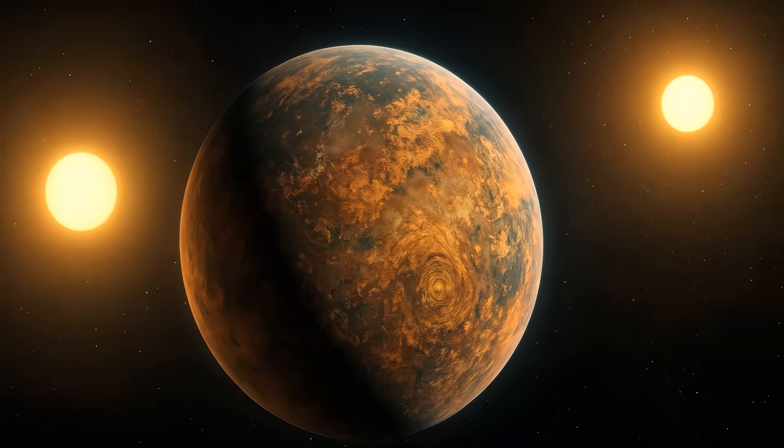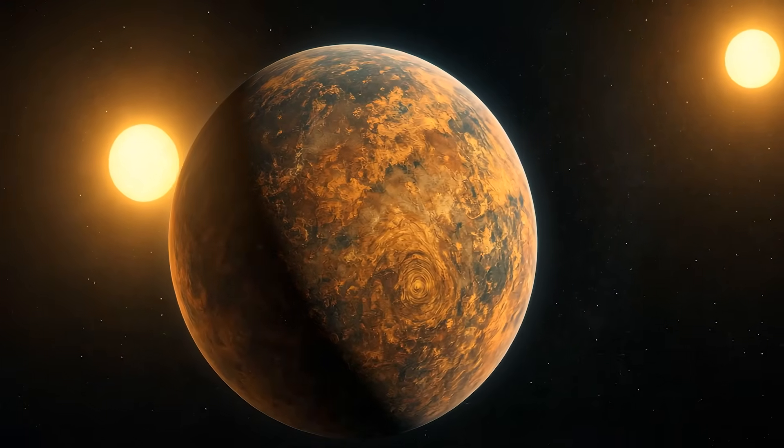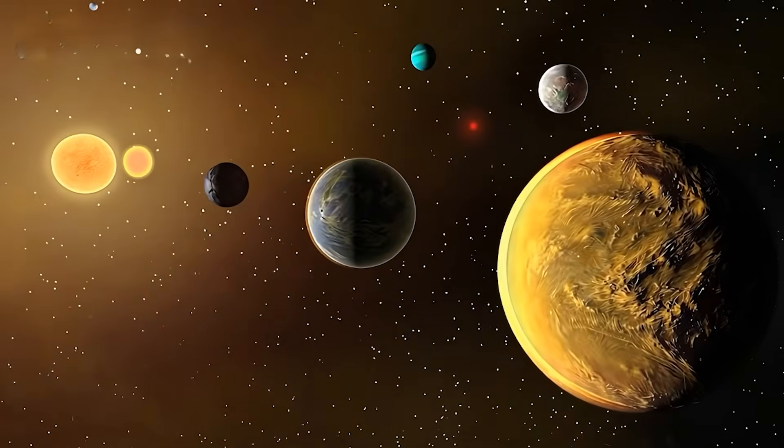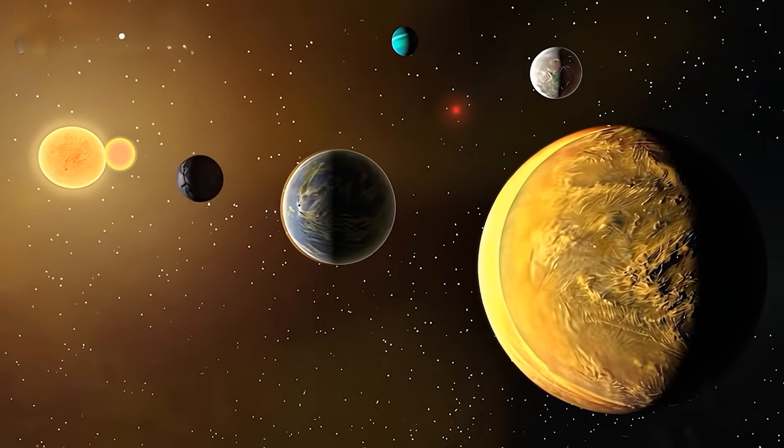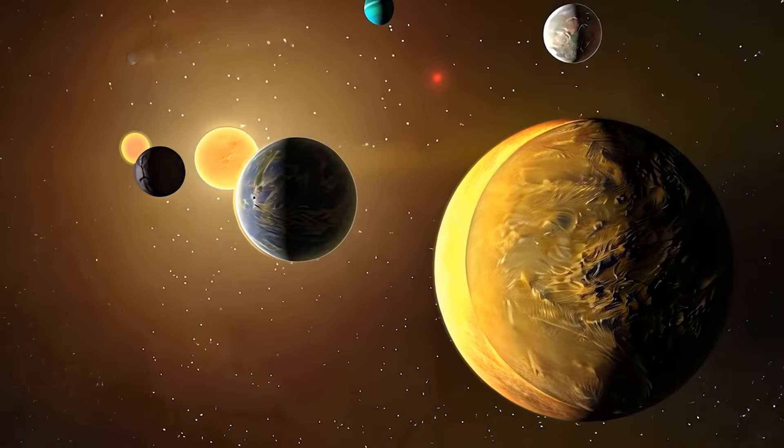The existence of this planet forces astronomers to completely reconsider planetary formation models. One leading theory suggests it formed normally but was gravitationally perturbed by a passing star or massive planet, flipping its orbit.